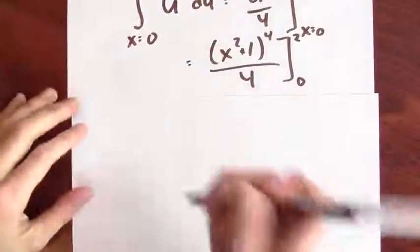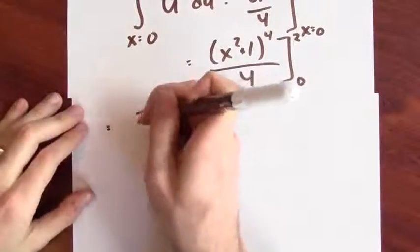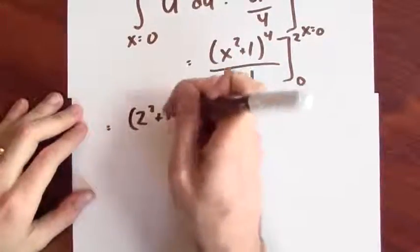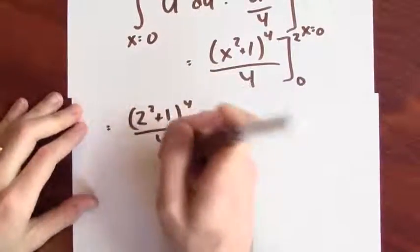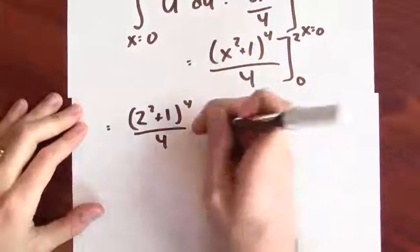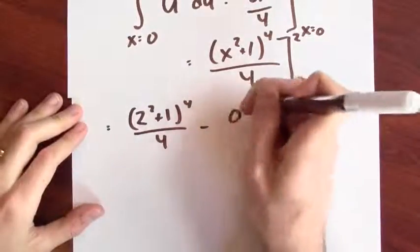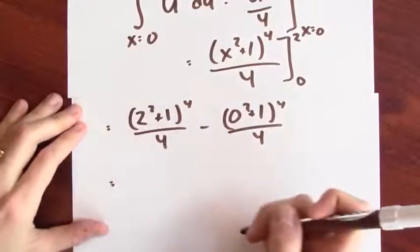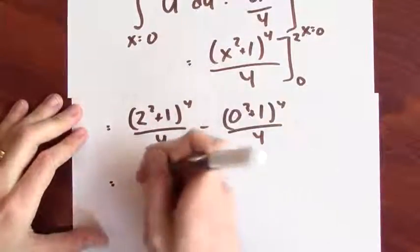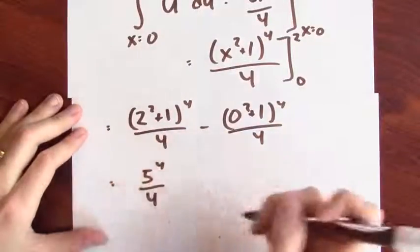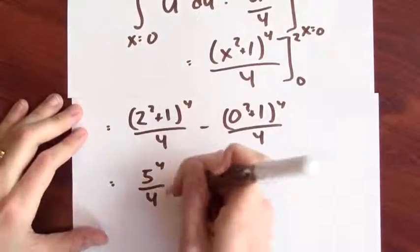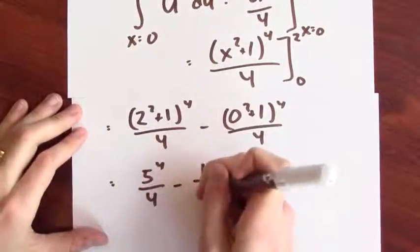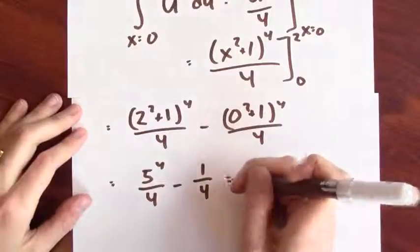When I plug in 2, I get 2 squared plus 1 to the fourth over 4. And when I plug in 0, I get 0 squared plus 1 to the fourth over 4. Well, what's 2 squared plus 1? That's 5 to the fourth over 4. And that's 1 to the fourth, which is just 1 quarter.